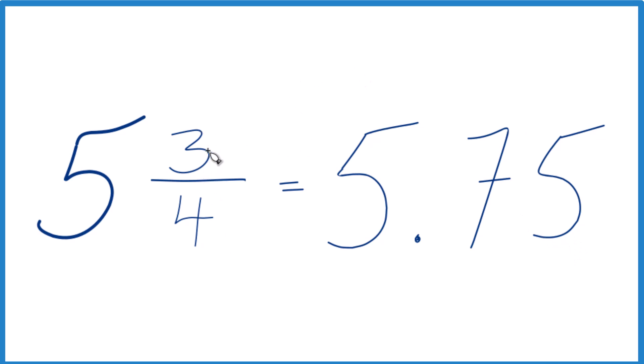we could just divide 3 by 4 to get this to a decimal. So let's see, we have 3. How many times does 4 go into 3? It doesn't go into 3, but we could call it 30 if we put a 0 and a decimal point here.